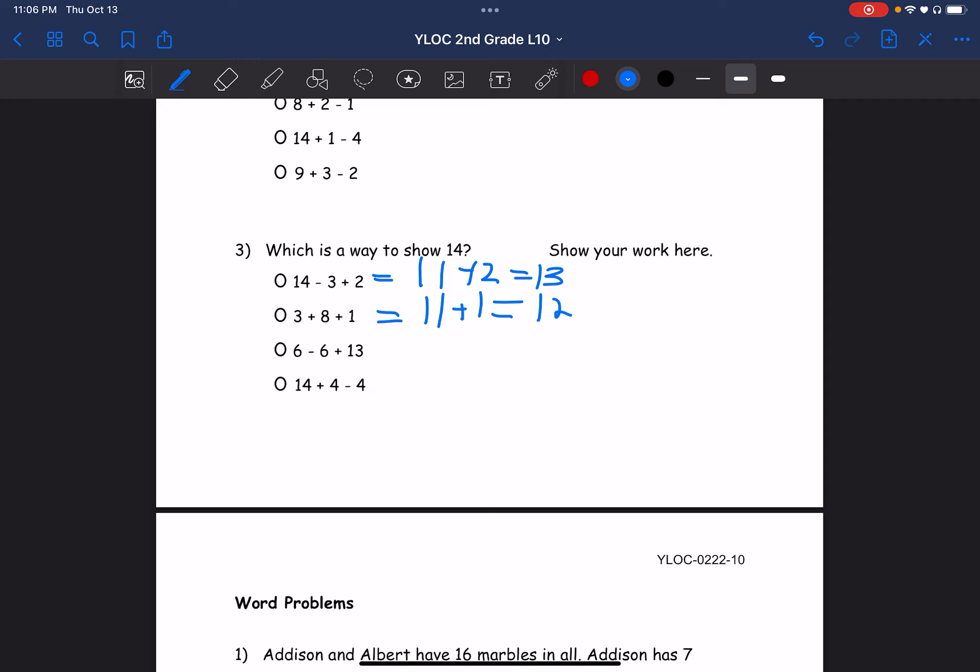And then we have 6 minus 6 plus 13. The 6 and 6 cancel each other out, so that's 0 plus 13 which equals 13. We're close but that's not the answer either. And then we see 14 plus 4 minus 4. I usually start from the beginning of the equation, but since I see 4 minus 4 and I know those cancel out, I can just do 14 plus 0 which equals 14, which is the answer we're looking for. So the answer would be the last one.